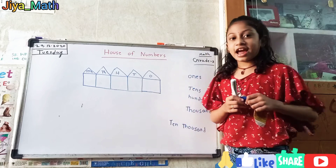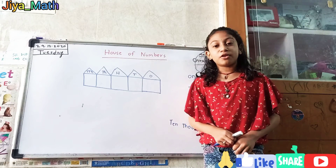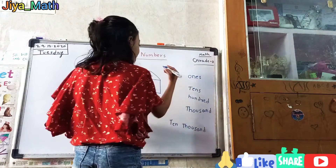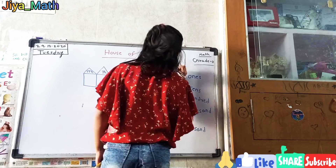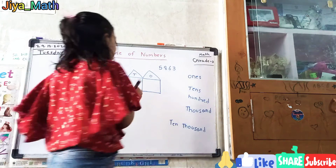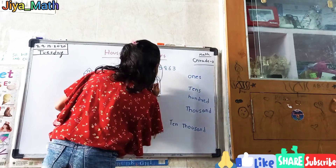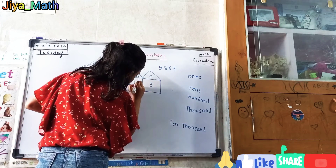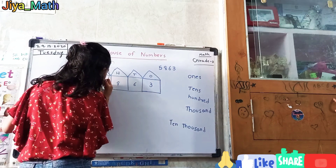So let's write in different houses, a number. So let's take one example and write in their houses. So let's take 5,863. We should not start from the left side, we should start from the right side. So let's write 3 in 1s, 6 in 10s, 8 in 100s, and 5 in 1000s.